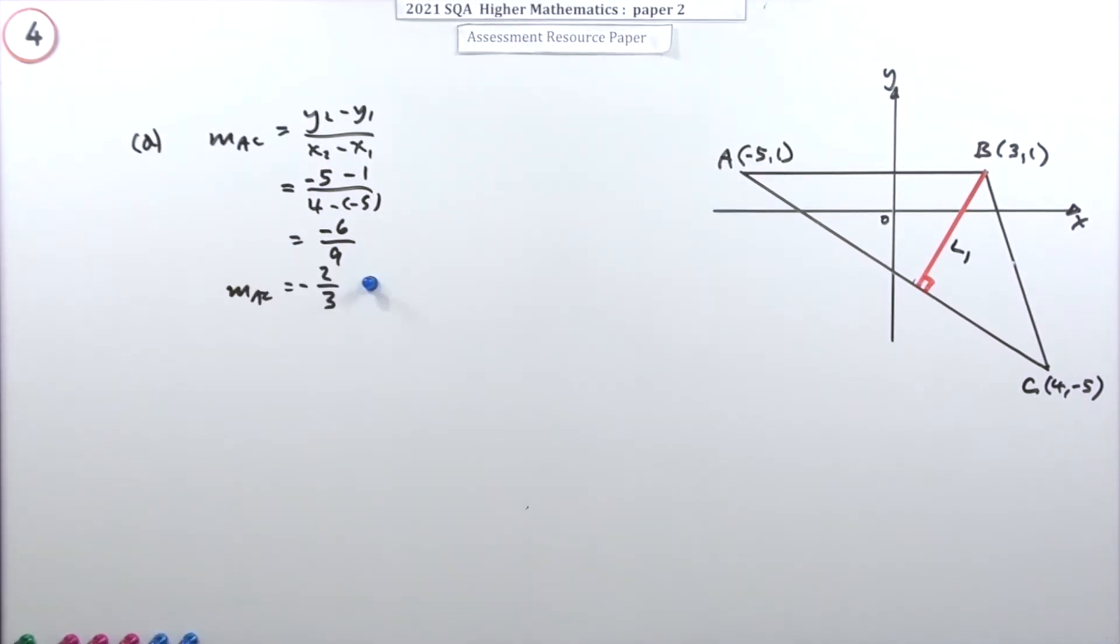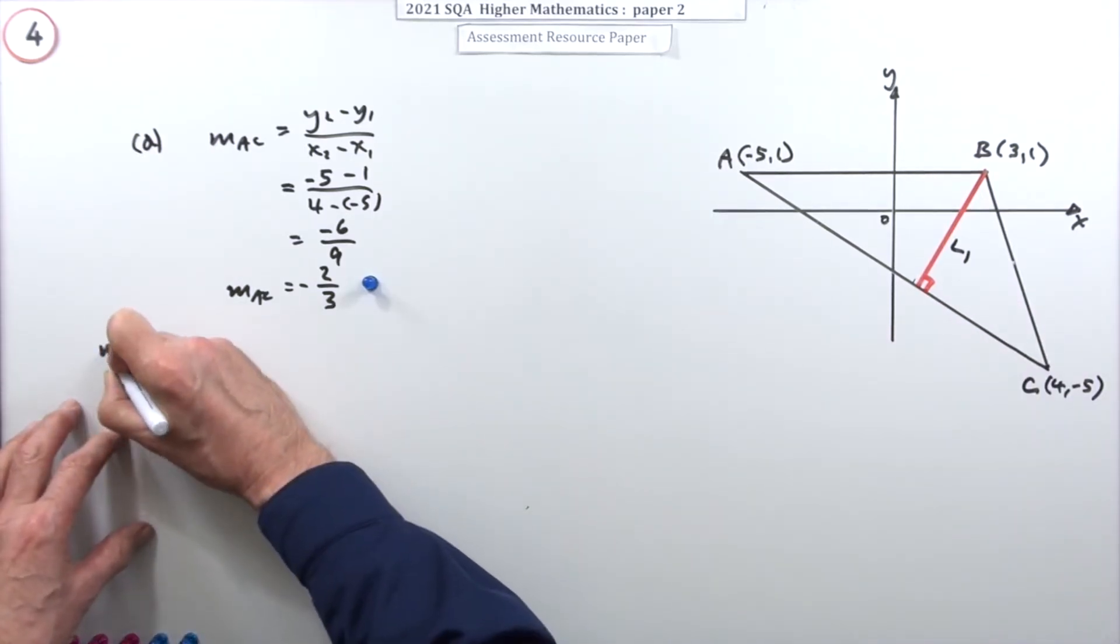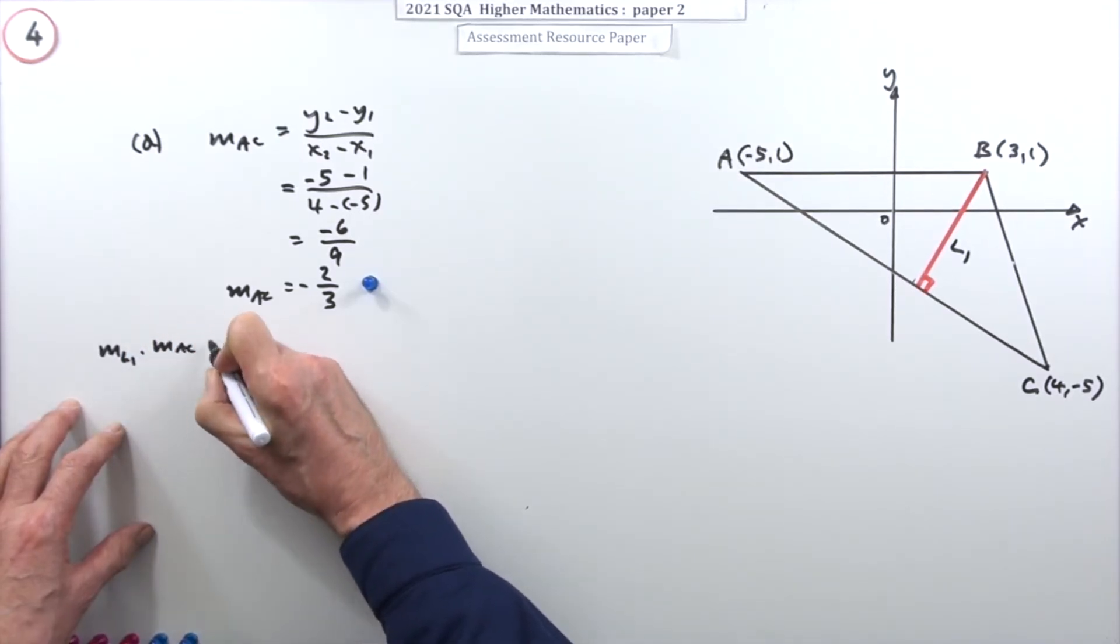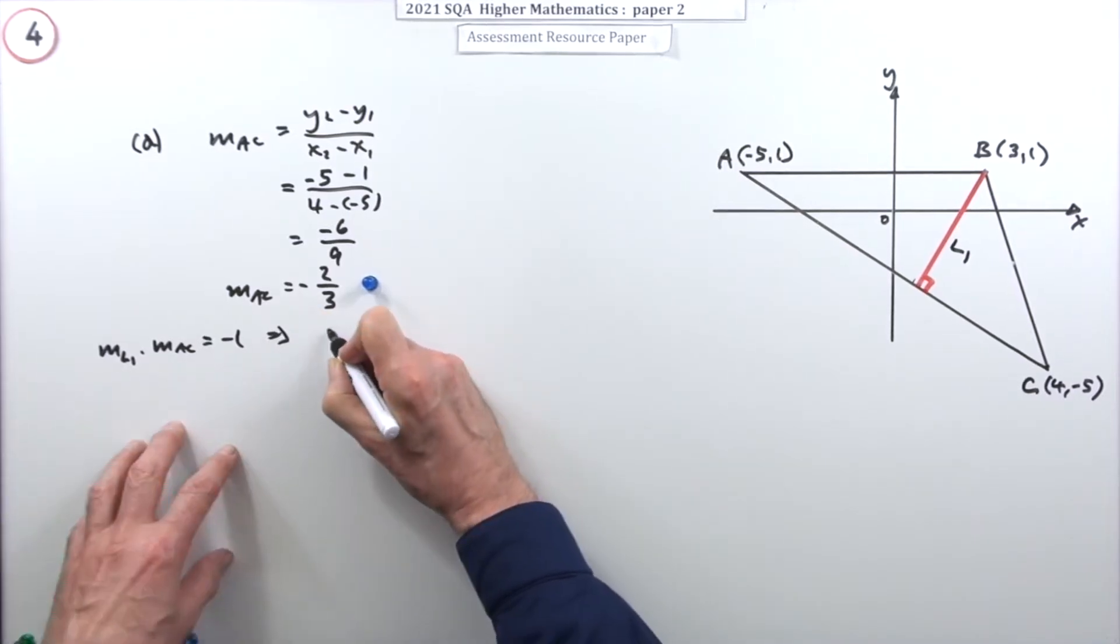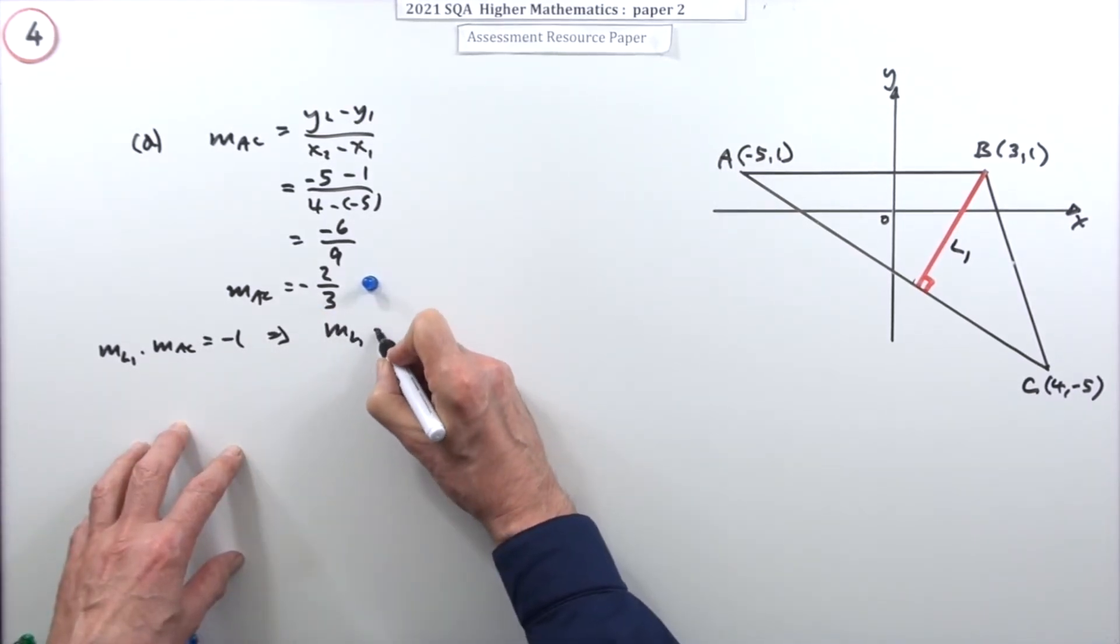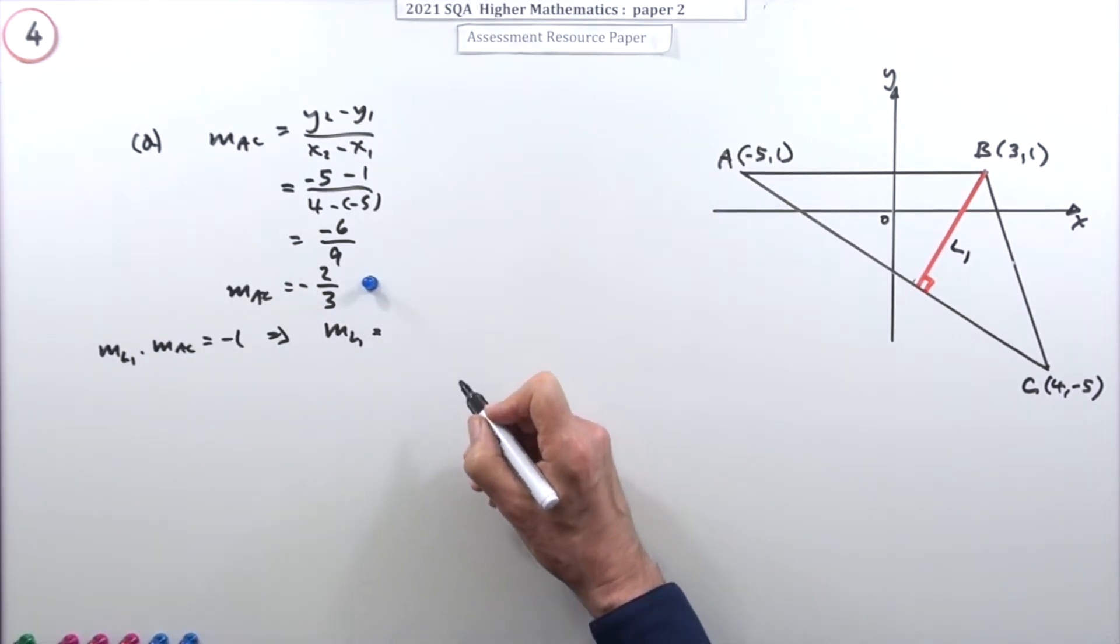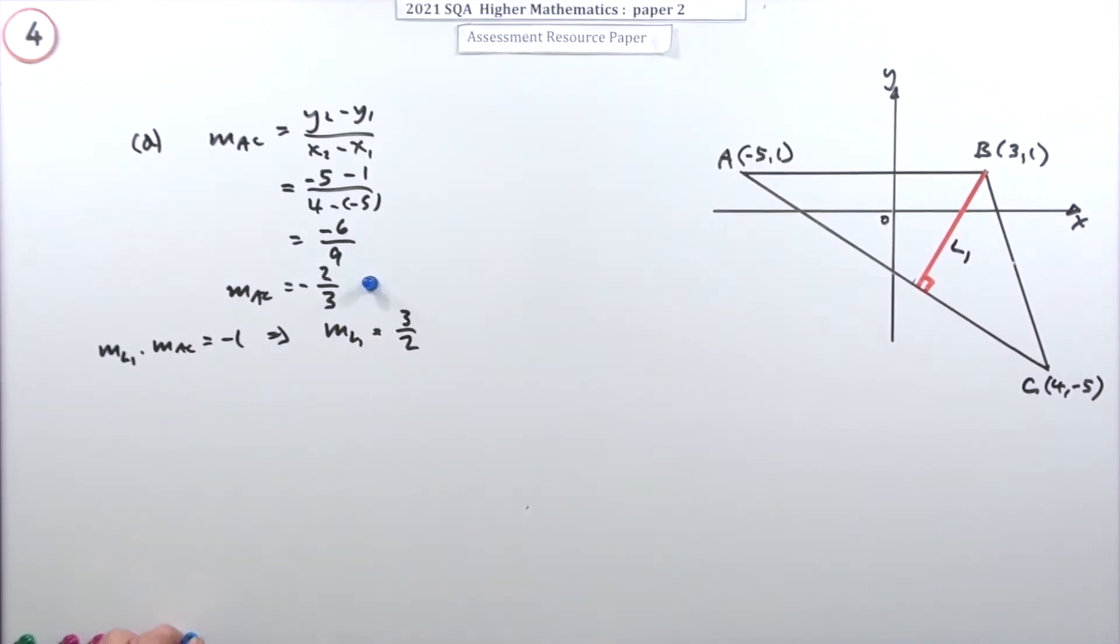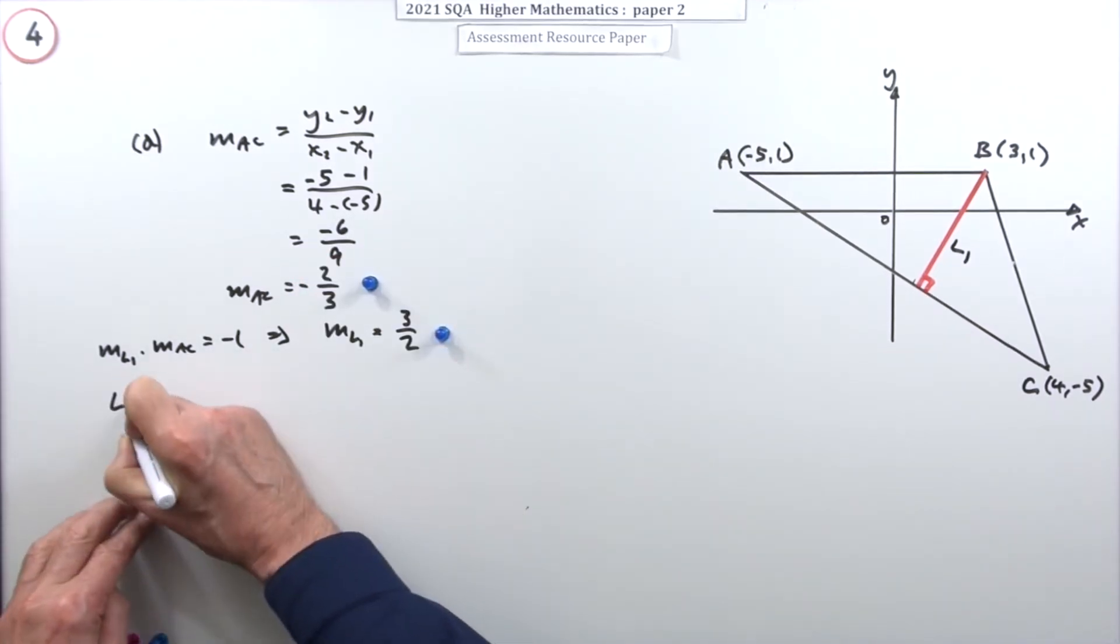Now from that you'll get the gradient of line 1. Gradient of L1 times the gradient of AC is -1, which means the gradient of L1 must be the negative of the reciprocal for it to come to -1, which is 3/2. That gets a mark.